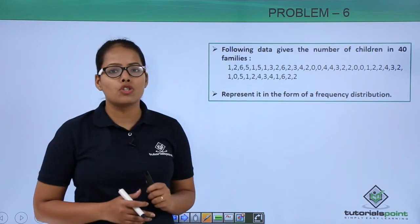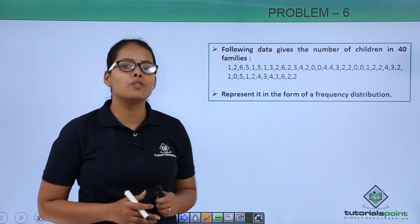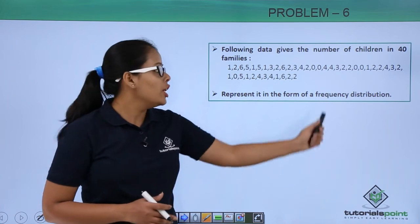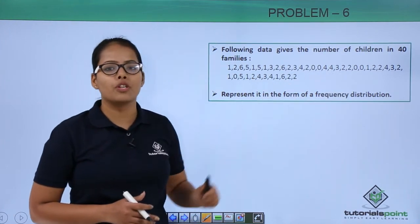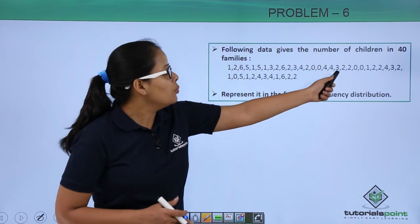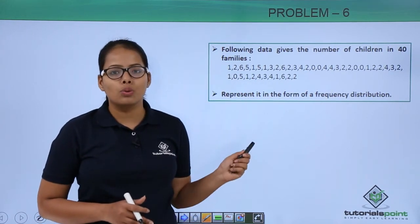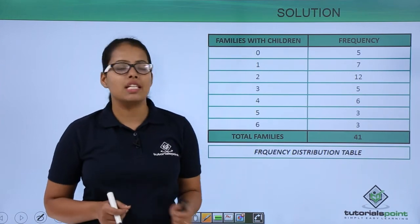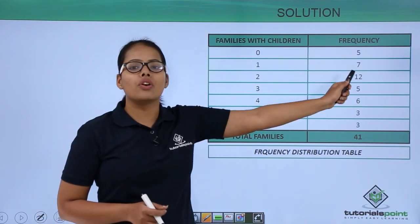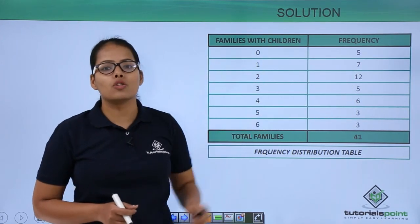Families with zero children. So here in this observation, what are you going to count? You are going to count the number of zeros in this observation: 1, 2, 3, 4, and 5. There are exactly five zeros which represents five families. So that's why there are five families with zero children.